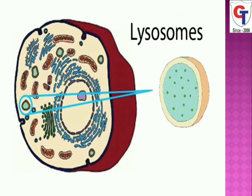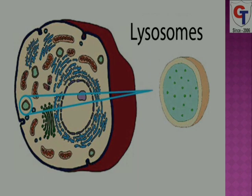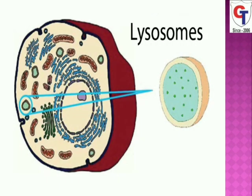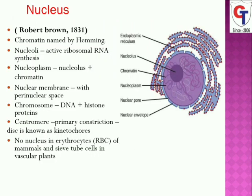Lysosomes contain hydrolytic enzymes including phosphatases, sulfatases, and glycosidases. With the help of these enzymes, they remove extra cell material. Hence lysosomes are called the suicide bag. Now we move to the next organelle: the nucleus.